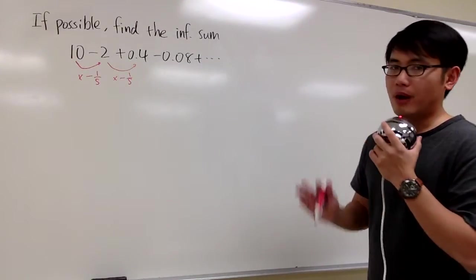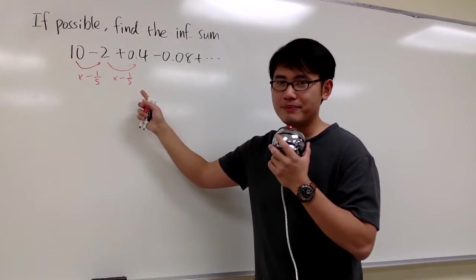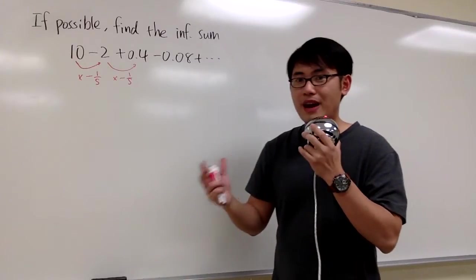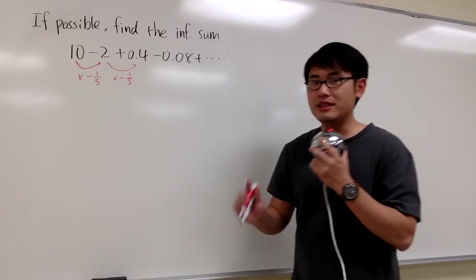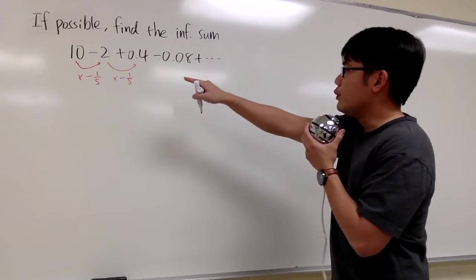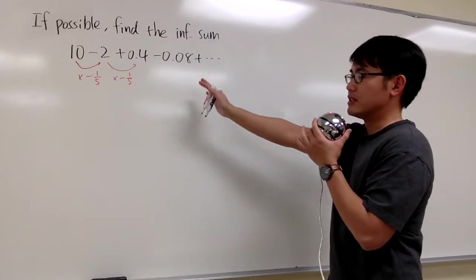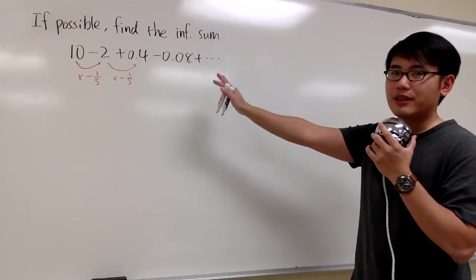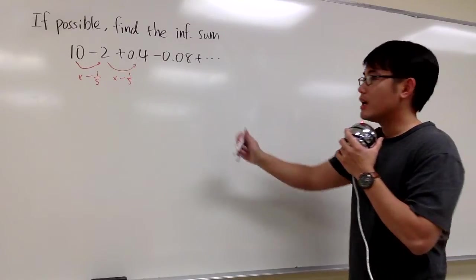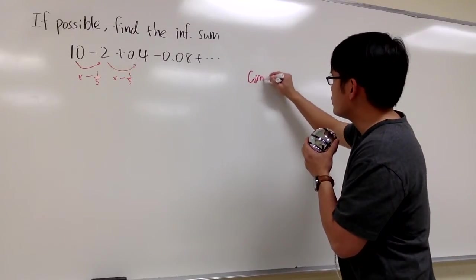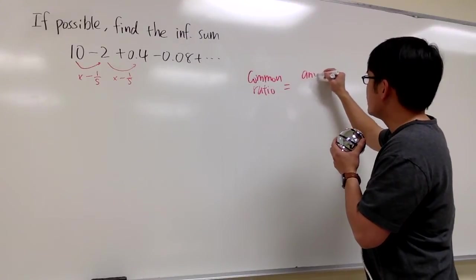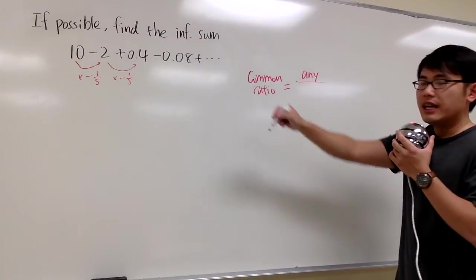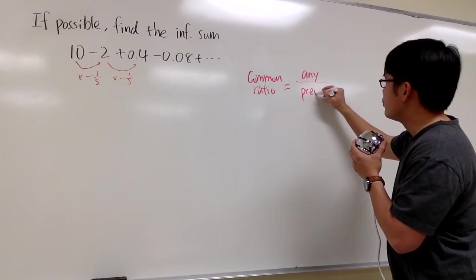Sometimes it may be hard to see the common ratio, because maybe the fraction is like 3 over 5 or 4 over 7. In that case, if you suspect this is a geometry series, the common ratio has to be any term—you pick any number from the list and divide it by its previous.